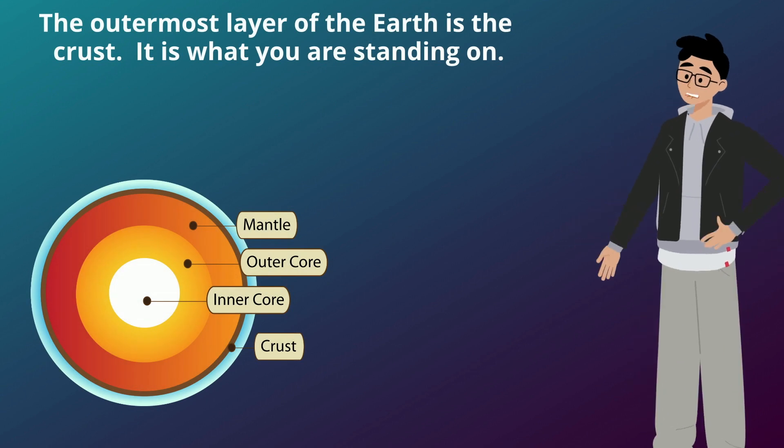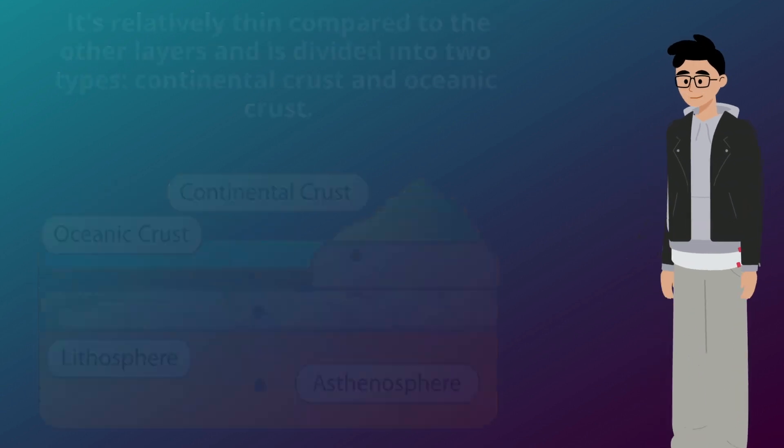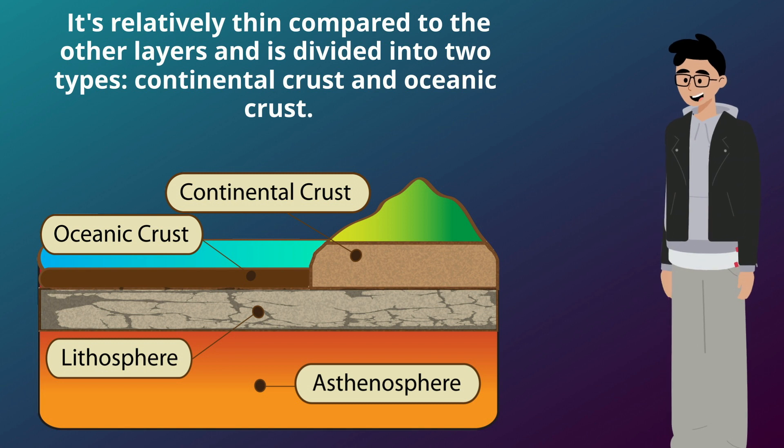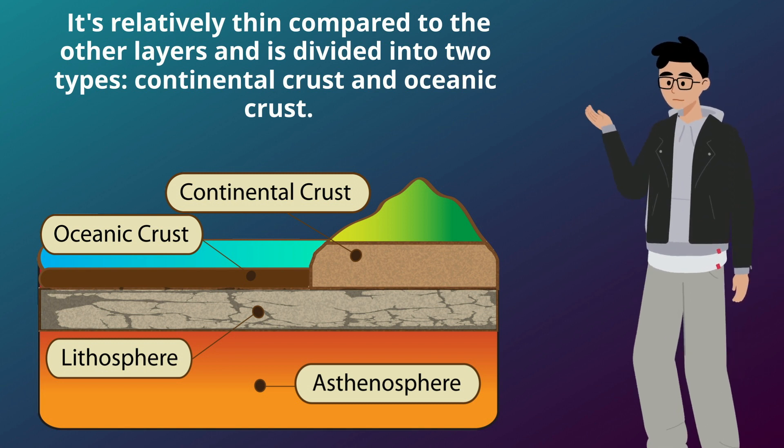The outermost layer of the Earth is the crust. It's what you're standing on. It's relatively thin compared to the other layers and is divided into two types: continental crust and oceanic crust.